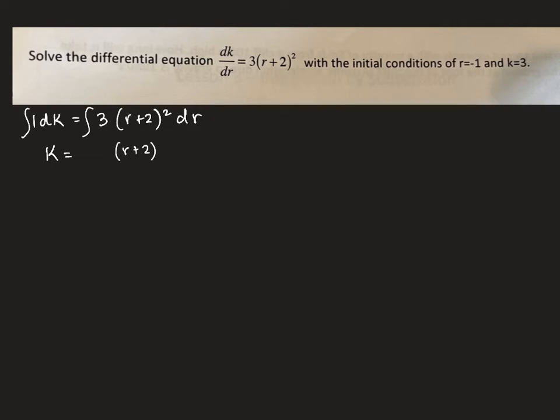So we would go (r+2), increase your exponent to a three, and divide by your new exponent. Now since there's a three in front it would be like three divided by three which would just turn into one.